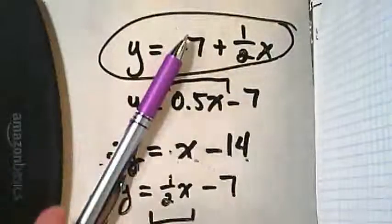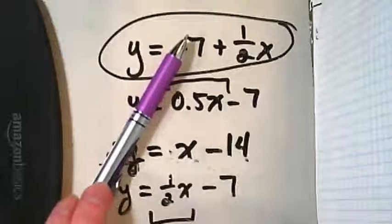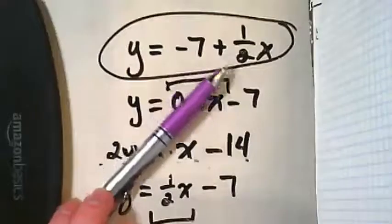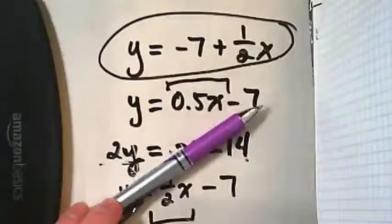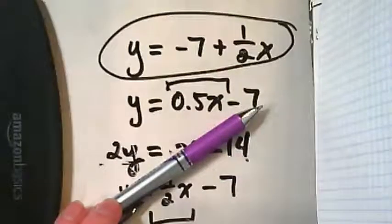if my pen was the line, the 2x was about like this, and then the one half x did this, didn't it? It made the line less steep.